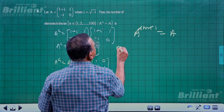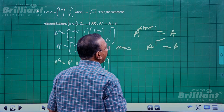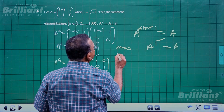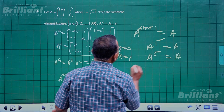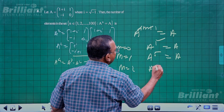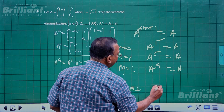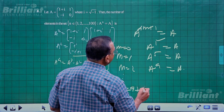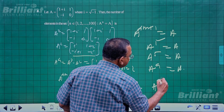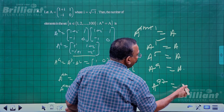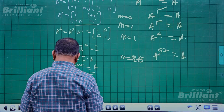When m = 0, n = 1; when m = 1, n = 5; when m = 2, n = 9; and so on. The sequence is 1, 5, 9, ..., 97. The last value before exceeding 100 is n = 97, corresponding to m = 24.